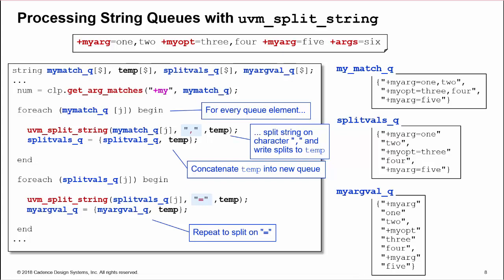So that's a quick look at user-defined command line arguments in UVM. I hope you found it useful.